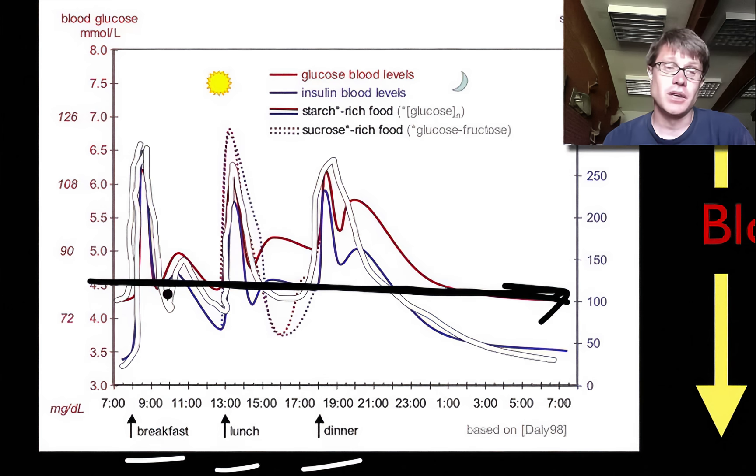If we were to eat smaller meals throughout the day, that would probably help us keep that together. But what happens if we have a mistake? What if we have an alteration in this feedback loop?